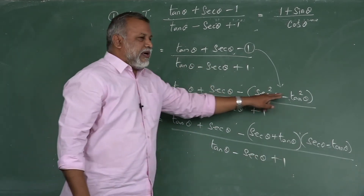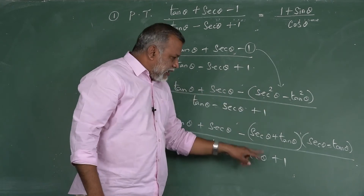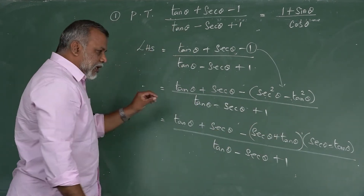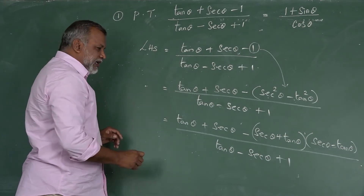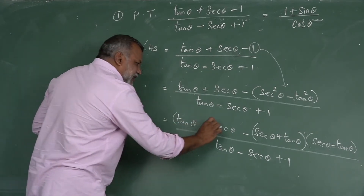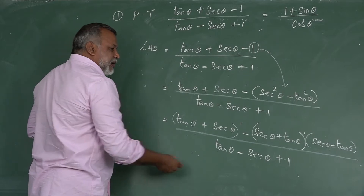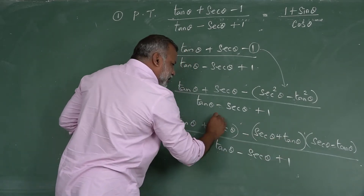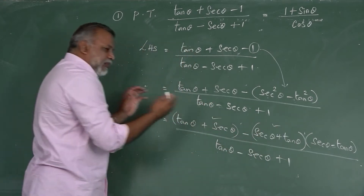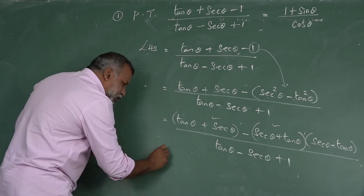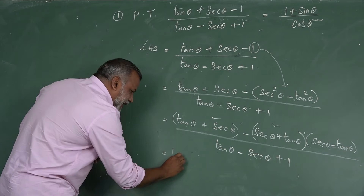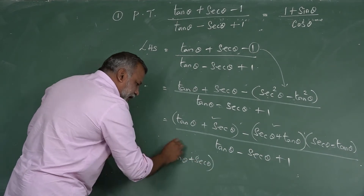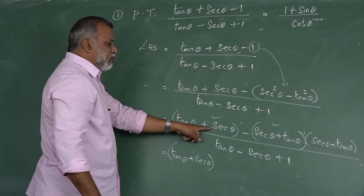The expression a² - b² is replaced as (a + b)(a - b). Now look at the numerator — we have (tan θ + sec θ) as a factor, and the denominator also contains tan θ + sec θ. These two factors are common, so we can take out the common factor tan θ + sec θ.